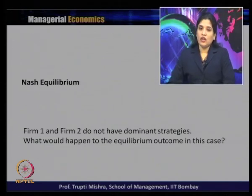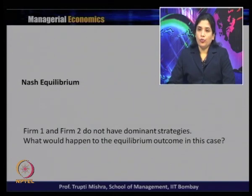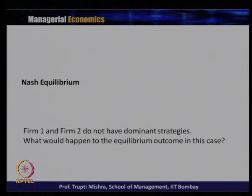We may get a case where firm 1 and firm 2 do not have a dominant strategy. What would happen to the equilibrium output in that case? It may happen that the payoff changes in such a way that there is no dominant strategy for one of them - suppose one is having a dominant strategy and the other is not. In that case, what is the Nash equilibrium? Nash equilibrium is ideally when the dominant strategy of one matches the dominant strategy of the other. But if there is an absence of a dominant strategy for one of the firms, what should be the equilibrium output?